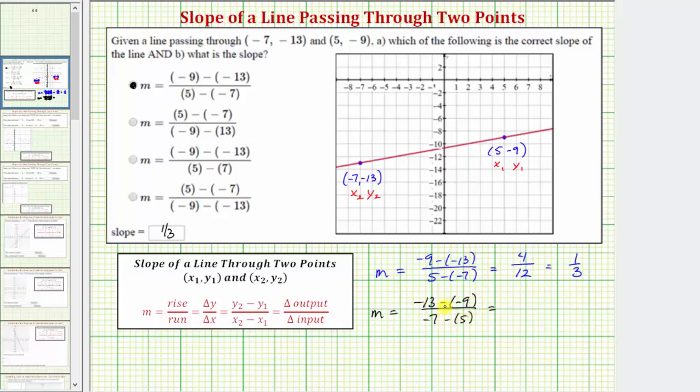Simplifying, -13 minus -9 simplifies to -13 plus 9, which is -4. And -7 minus 5 equals -12. Notice -4 divided by -12 also simplifies to positive 1/3.